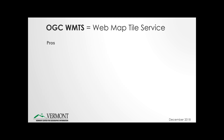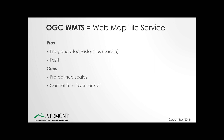There are certain pros to this: everything is pre-generated, meaning it doesn't need to be generated on demand, and that translates into fast performance. But there are some cons. The pre-cached services are defined and pre-cached at certain scales, so any rendering at scales in between will be interpolated depending on the client. Users cannot turn layers on and off, cannot change symbology, and they are limited to the specific coordinate system that has been pre-tiled.